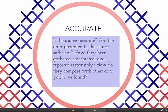The second A stands for accurate. Is the source accurate? Are the data presented in the source sufficient? Have they been gathered, interpreted, and reported responsibly? How do they compare with other data you have found? Not only are we looking at the source holistically, we're analyzing the writer's use of sources as well.